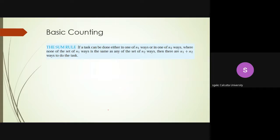Similar to the product rule, there is a sum rule. The sum rule does not talk about sub-parts but about alternative ways of doing the same thing. For example, to reach Karuna Mohi you can go by app cab, by auto, by rickshaw, by your own car, or by bike. All these are independent ways of doing the same thing. There may be two app cabs — Ola or Uber — so going by app cab gives you two ways.